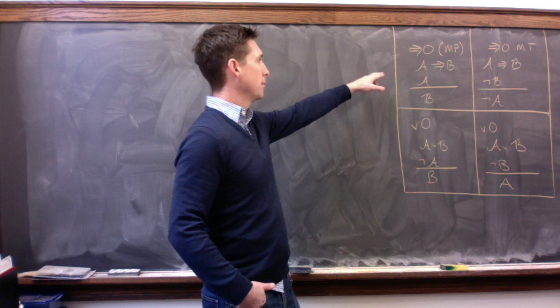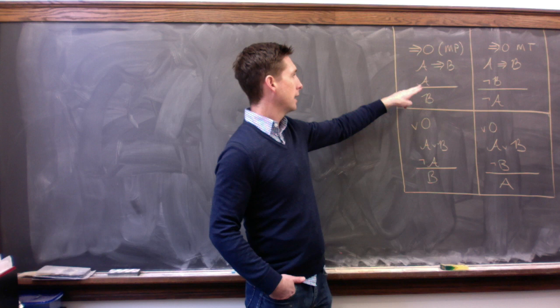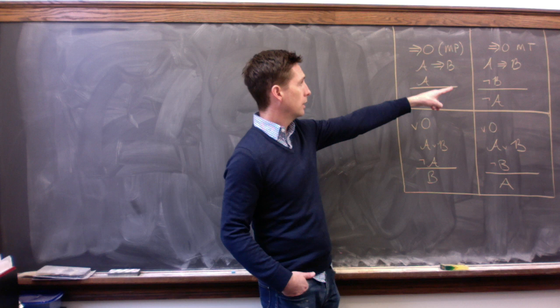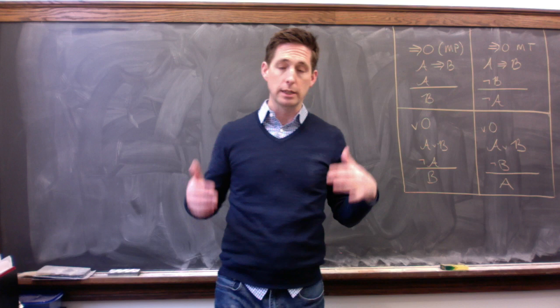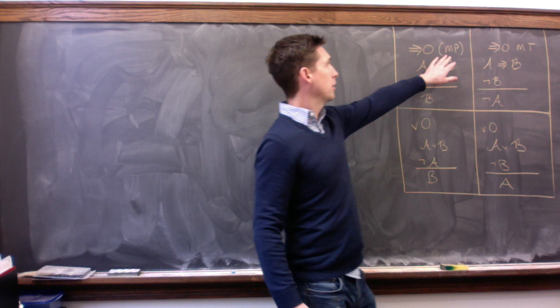So the first is modus ponens. It says if A and B are arbitrary formulas, then if you've got something in the form A arrow B and A, you can derive B. The other one there, modus tollens, is one that we also saw last time. It says if you know that A arrow B is true and not B, then you know that not A, again where A and B can be any formulas, they don't have to just be A's or B's, they could be complex, they could be different letters like P or Q.